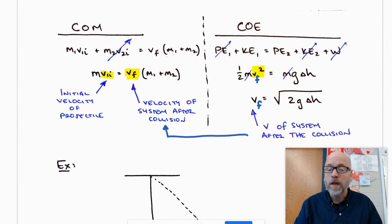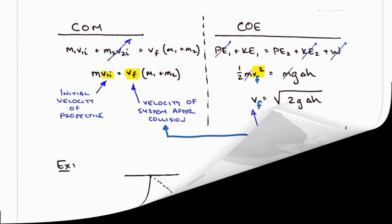I can see it would be much clearer if I put a small f right here, and that velocity is the velocity after the collision. So if I can measure delta H, I can find the velocity after the collision. If I can find the velocity after the collision, I can work all the way back to the beginning and find the velocity of the projectile.